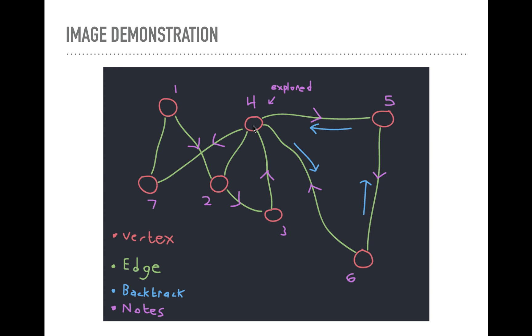From four, is there anywhere we can go we haven't been? Well, we've already seen this edge. We've already seen this edge. We've already seen this edge. An associated vertex. We've already seen two. The only place we haven't been is down this edge into seven. So we follow that. And this is seven because it's the seventh vertex that we visited.